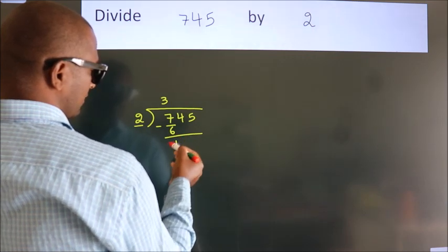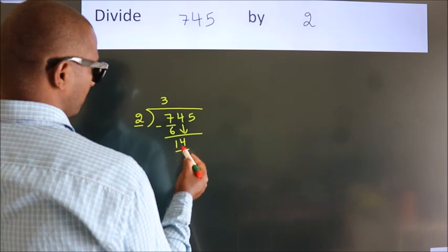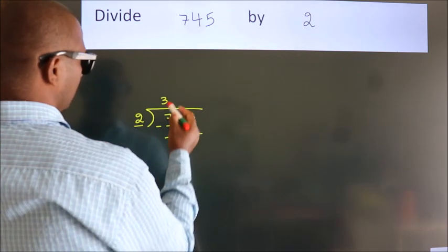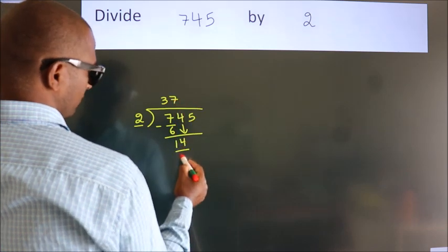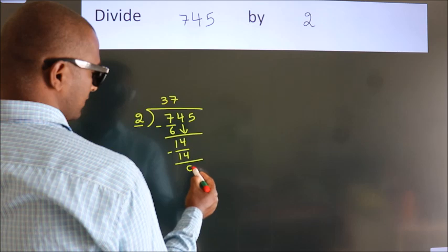After this, bring down the beside number. So 4 down, making 14. When do we get 14? In the 2 table, 2 sevens, 14. Now we subtract, we get 0.